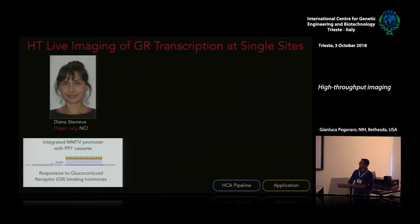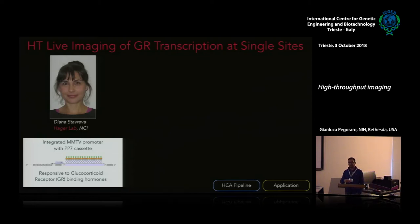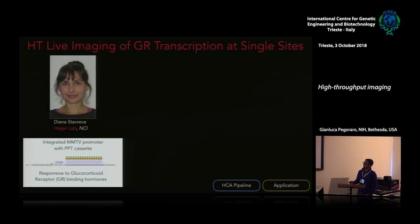Before describing the image analysis pipeline, let me introduce one application. Diana Stavreva, a staff scientist from the Hager lab, wanted to use this pipeline to measure transcriptional initiation from a promoter responsive to glucocorticoid receptor binding hormones — GR. Since she wanted to study GR transcription, she inserted several repeats of PP7 arrays downstream of this promoter in the 3' side of a particular reporter.